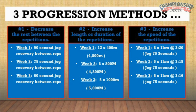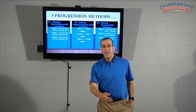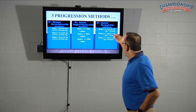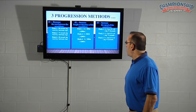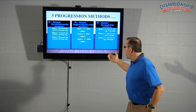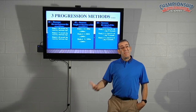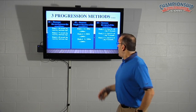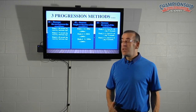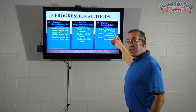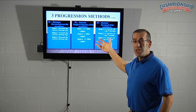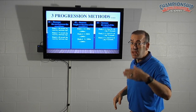Week number three, you increase the length of the repetitions slightly and assign five times 1000 meters. Total volume 5000 meters — only slightly more than weeks one and two, but it is a little bit harder because the repetition lengths are longer. It's a systematic progression. After three weeks are over, you might return to week one's format of 400 meter repetitions, but assign a faster pace.